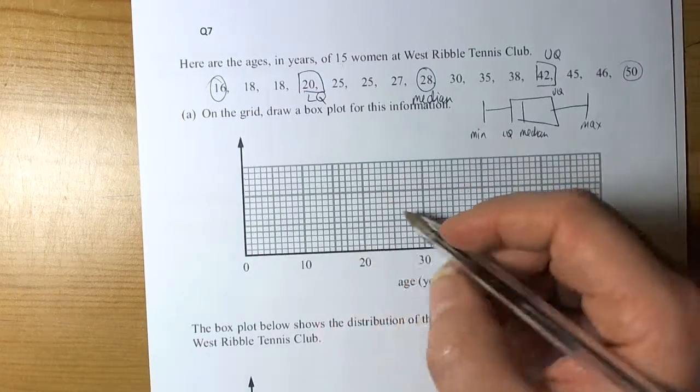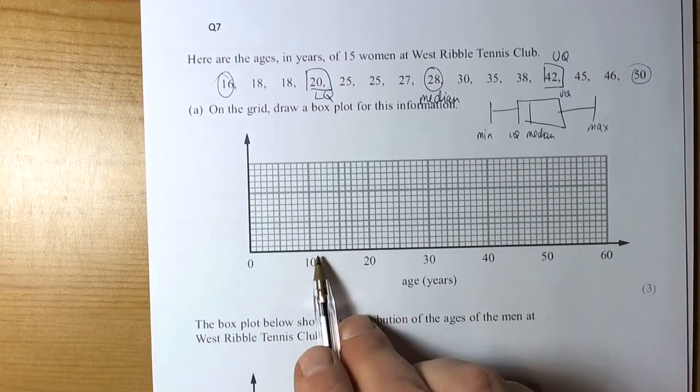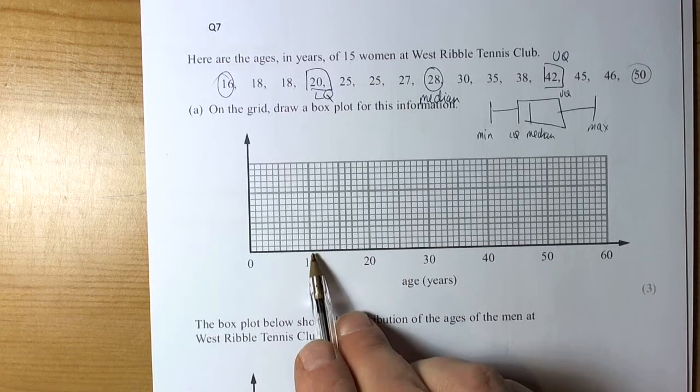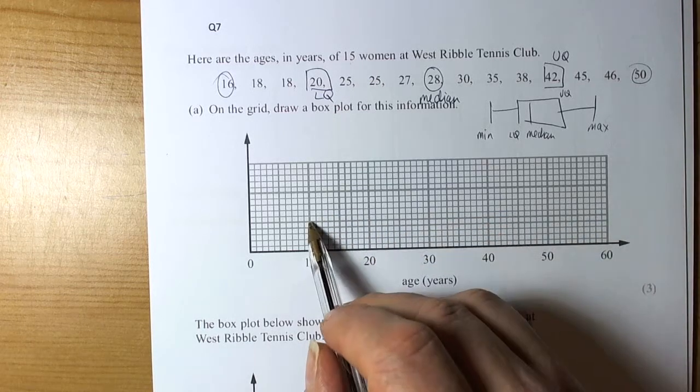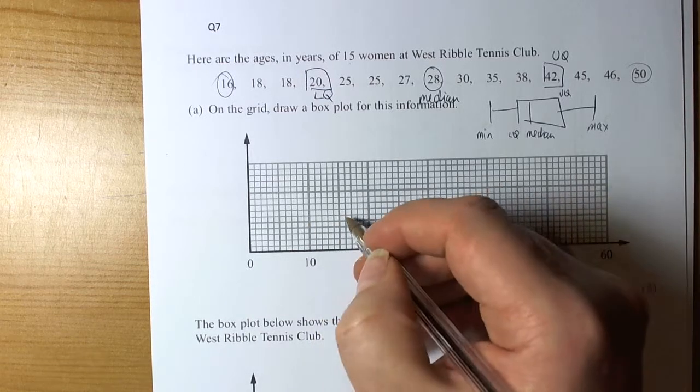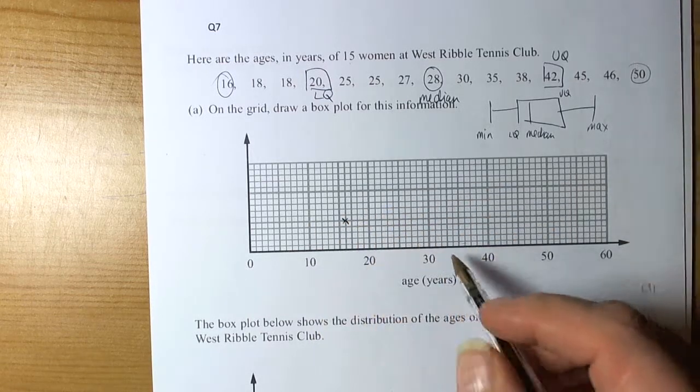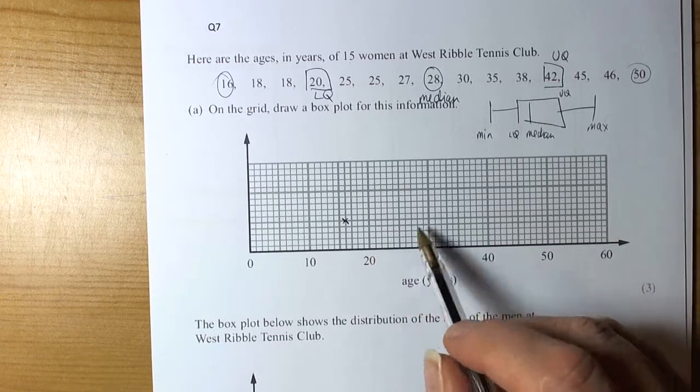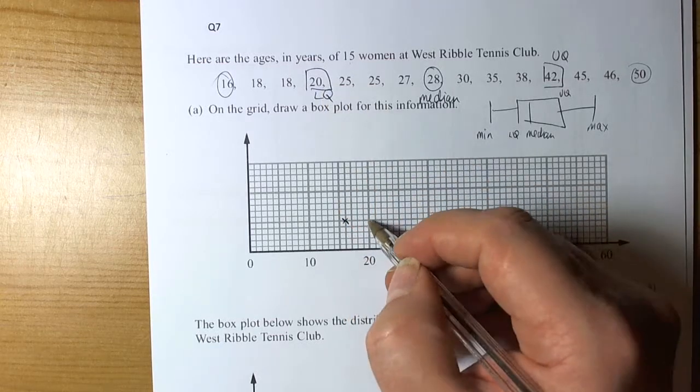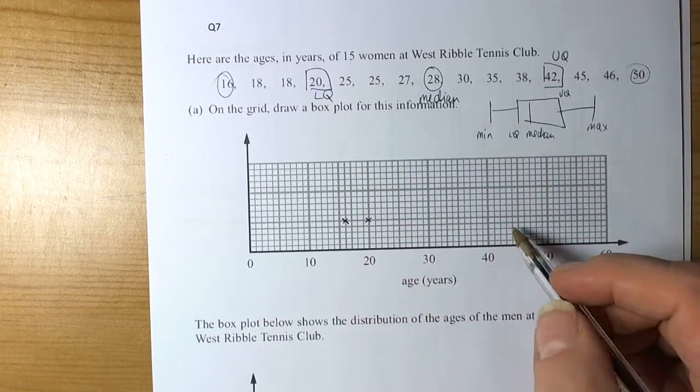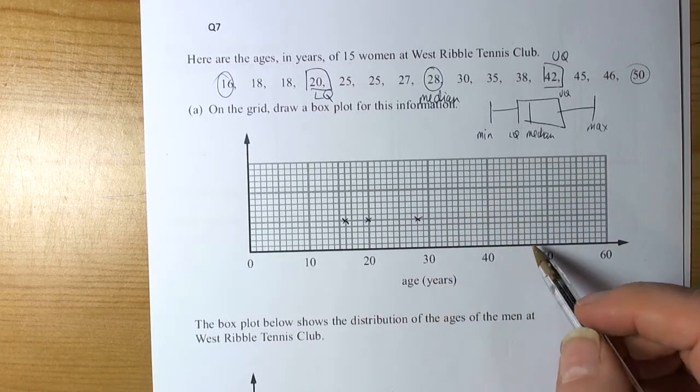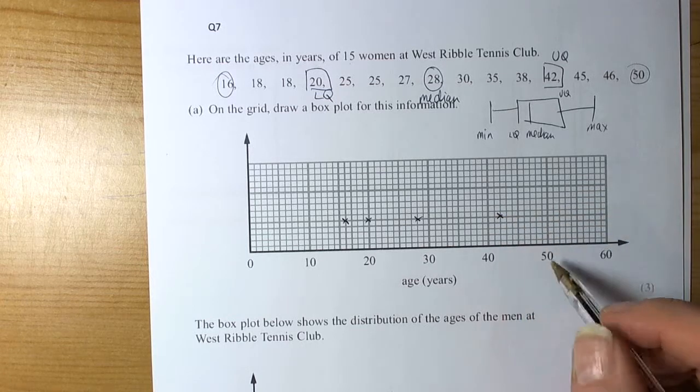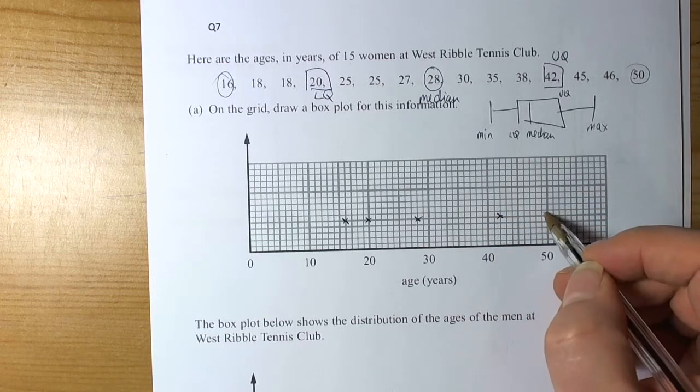So the minimum value is 16, so again we always look at the scale of the graph and we can see here that for every little square it's worth 1. So 16, that's 15 to 16, so we plot that point. And then the lower quartile was 20, so we plot that point. The upper quartile was 42 and the maximum value was 50.